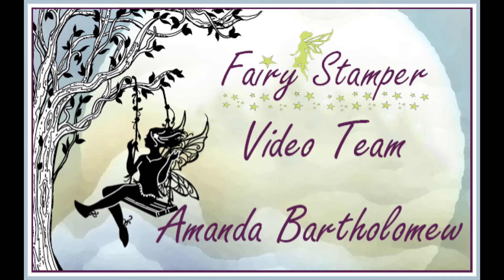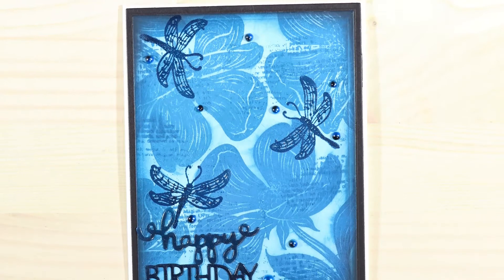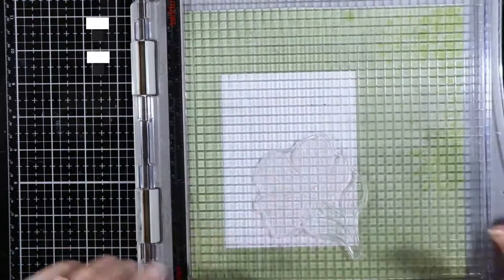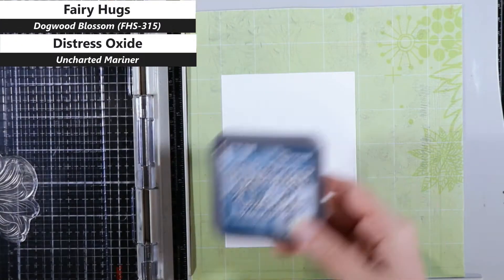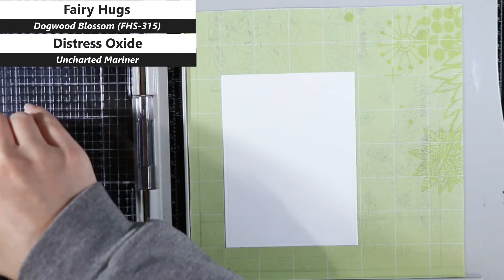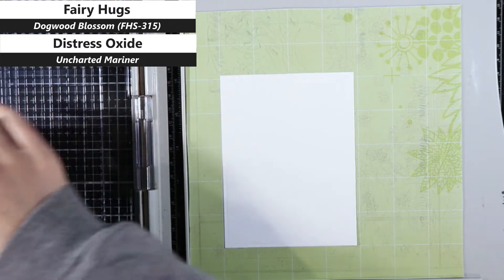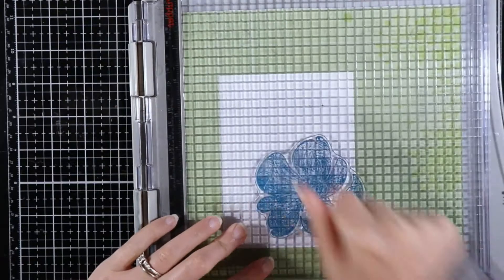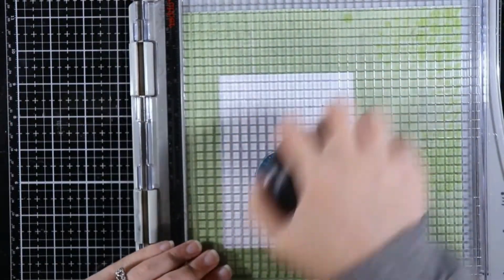Hi, this is Amanda back with another Fairy Stamper design team video. Today I'm going to be sharing a very easy technique that I'm calling distress oxide smearing. I imagine that you could do this with any pigment inks, but this is the pigment ink fusion that I have, so I'm using the new Uncharted Mariner ink.